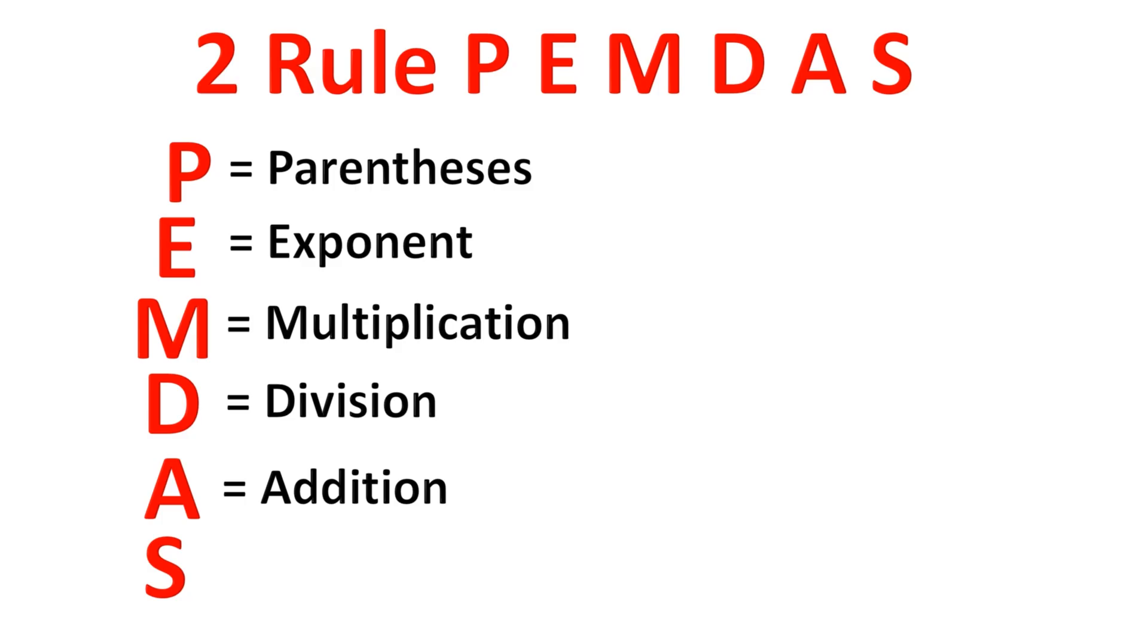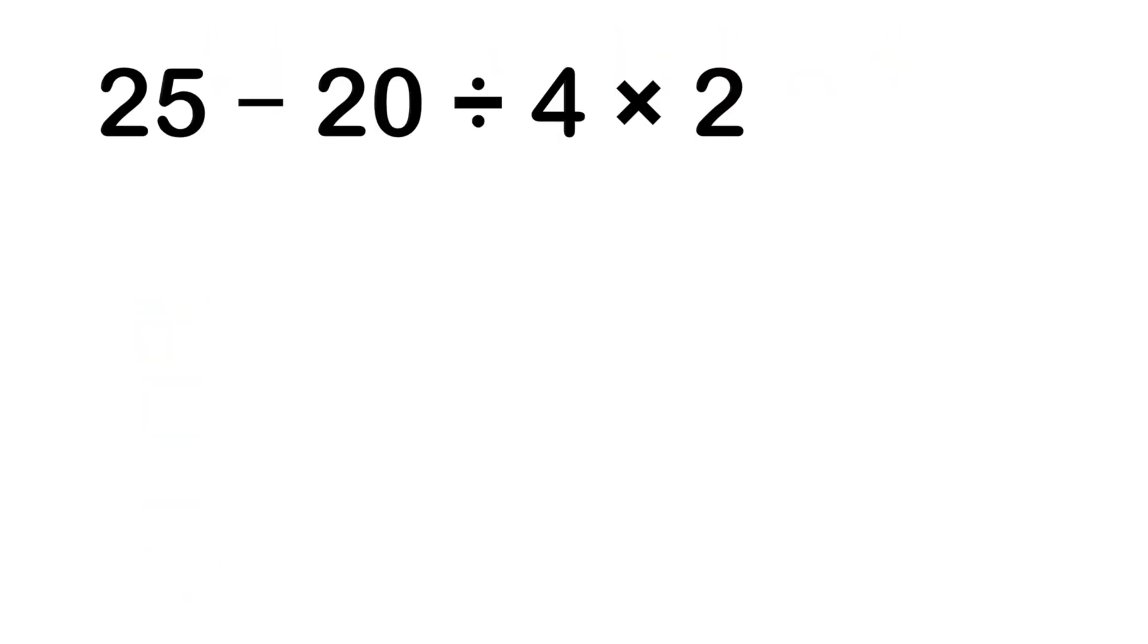So we ignore the 25 for a second and focus on this part. 20 divided by 4 times 2 left to right. 20 divided by 4 is 5. Then take that 5 and multiply it by 2. That gives us 10.